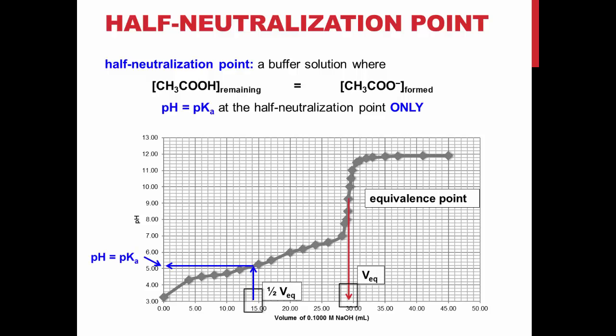Experimentally, this point is found by dividing the volume of the titrant required to reach the equivalence point in half to find the half-neutralization point, and interpolating the graph to the pH at that volume.